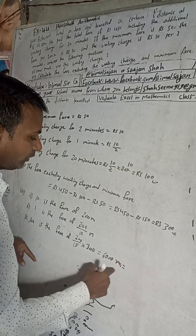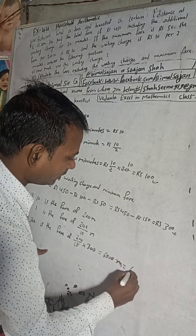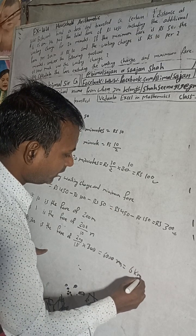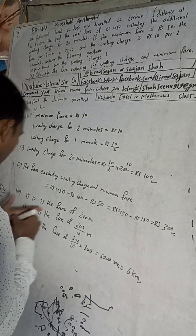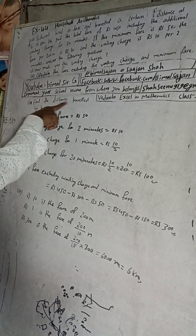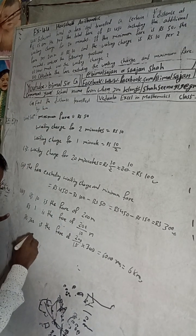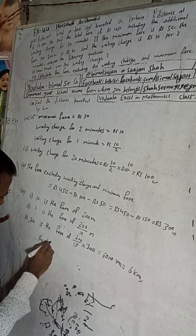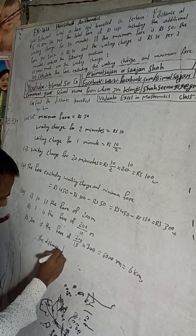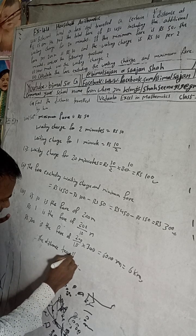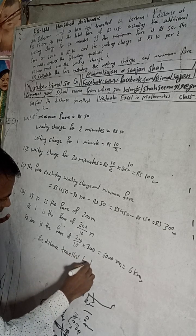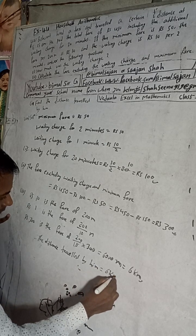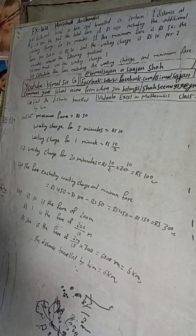6000 meters is called 6 kilometers. So this is the required answer. Therefore, the distance traveled by him is equal to 6 kilometers.